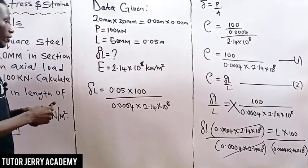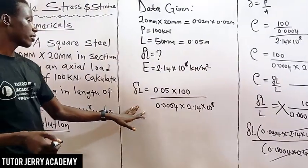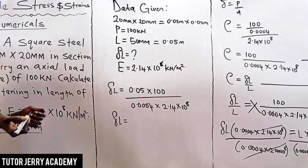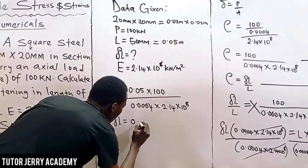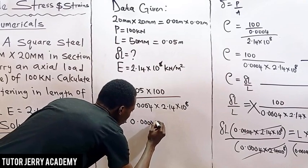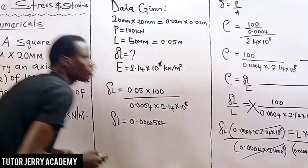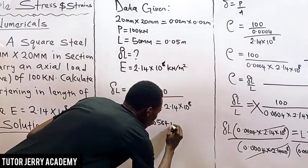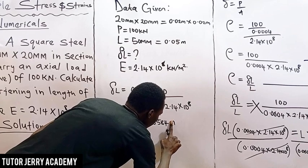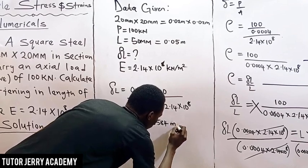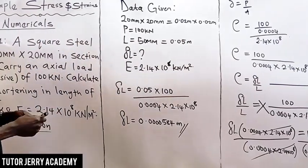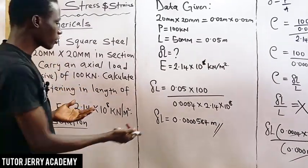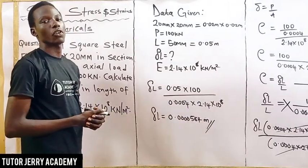Solving this mathematically, our change in length is equal to 0.0000584 meters. Our dimensions are in meters, so this is also in meters. The shortening in length of the 50mm rod is 0.0000584 meters.